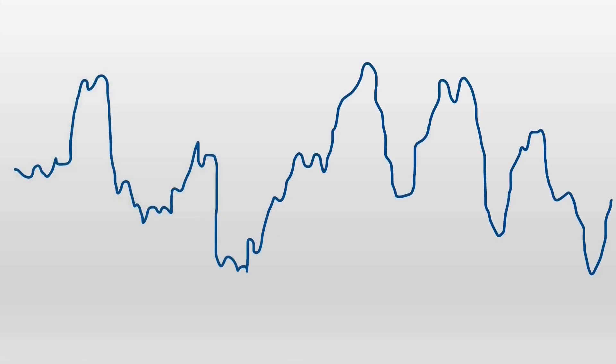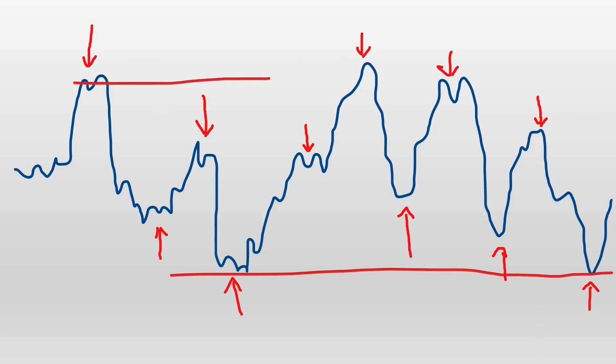Just to recall what support and resistance lines are: if we have a stock price chart, we're meant to look at levels where the price has changed direction. The theory is that these are lines where traders have decided they will either start buying at a particular price, which is the support level, or start selling at a particular price, which is the resistance level.